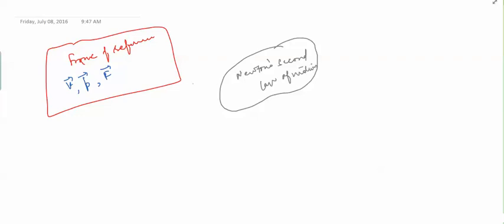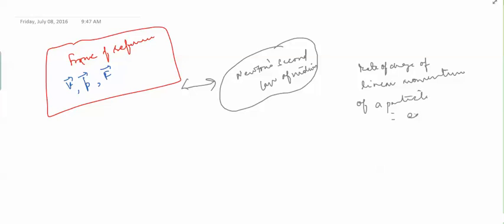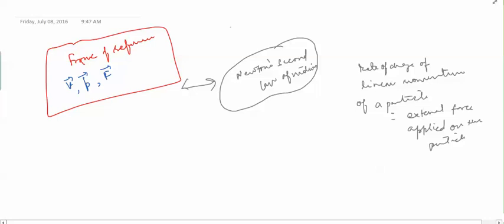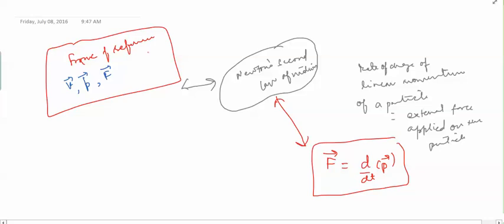Newton's second law of motion comes into picture. It tells us that the rate of change of linear momentum of a particle is equal to the external force applied on the particle. So F = dp/dt — this is what we get from Newton's second law of motion.